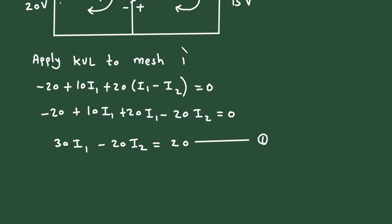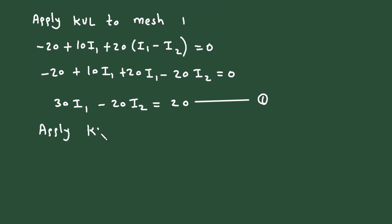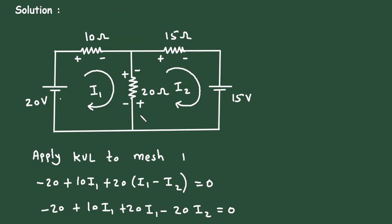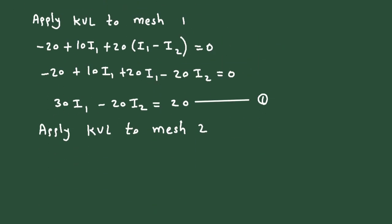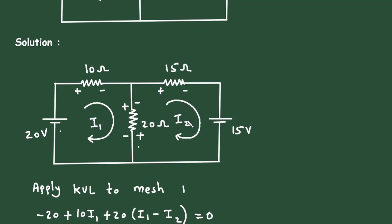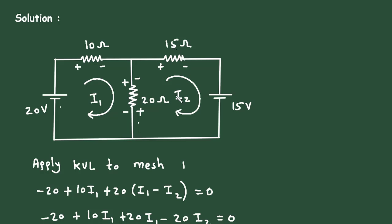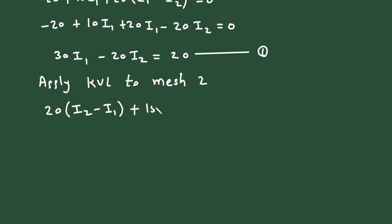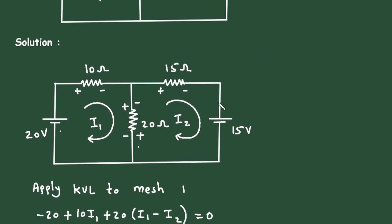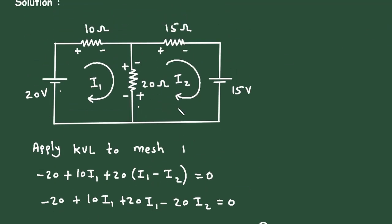Now similarly we will apply KVL to mesh number 2. Starting from this point, the 20 ohm resistor is common to both mesh 2 and mesh 1. Since we are now solving for mesh 2, it will be 20(I2 minus I1), then plus 15 I2. The loop is completed, so it equals 0.